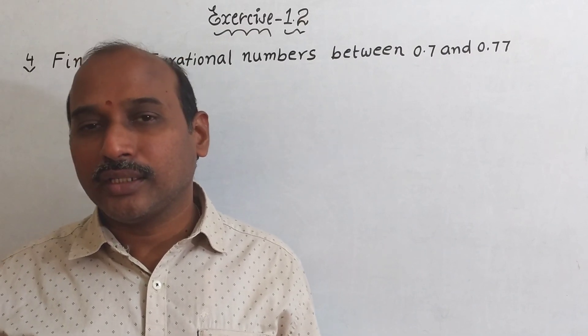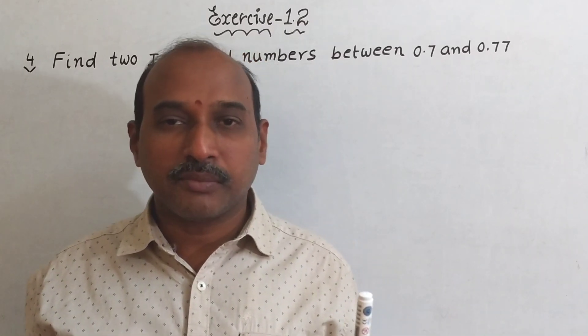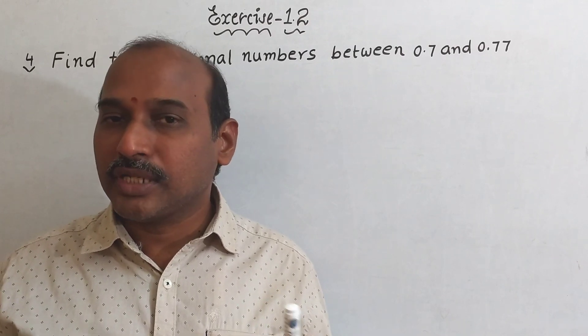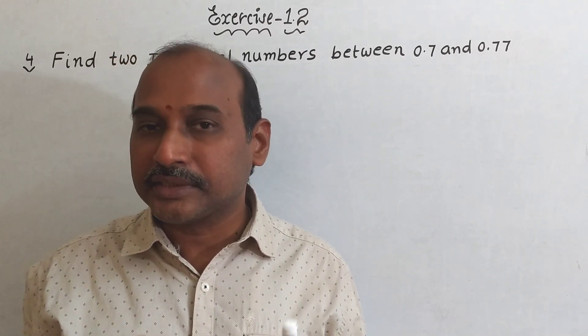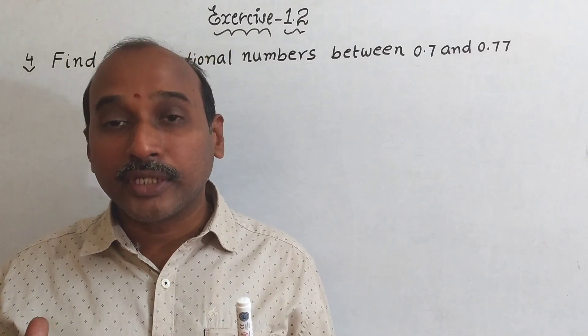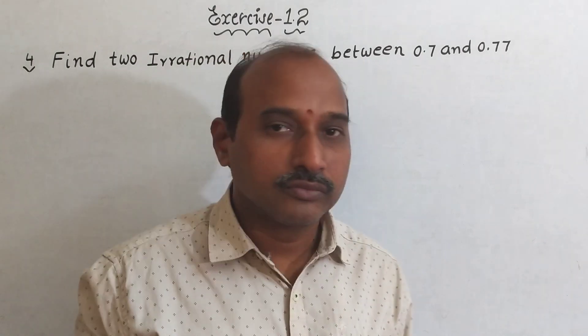We already know in between two numbers there are infinite number of irrational numbers. So whatever you want you can write, but you have to follow the condition. After the decimal point, it should not be repeated continuously - that you have to follow.